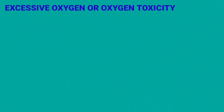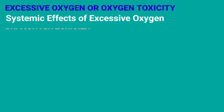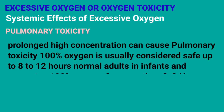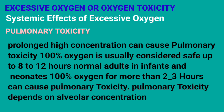Excessive oxygen, or oxygen toxicity: Systemic effects include pulmonary toxicity. Prolonged high concentrations can cause pulmonary toxicity. 100% oxygen is usually considered safe up to 8–12 hours in normal adults. In infants and neonates, 100% oxygen for more than 2–3 hours can cause pulmonary toxicity. Pulmonary toxicity depends on alveolar concentration.